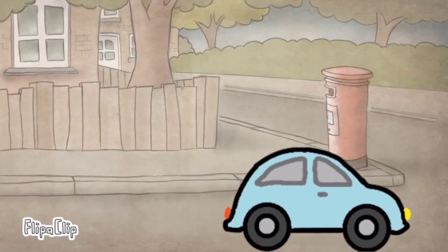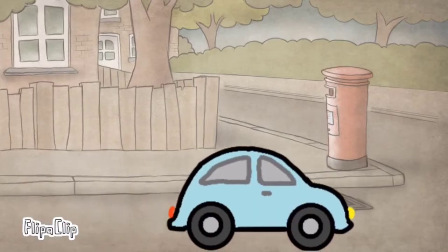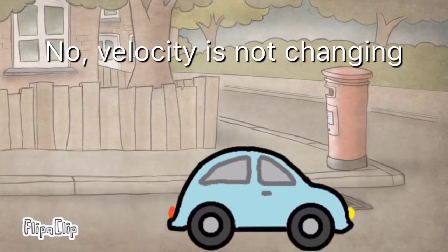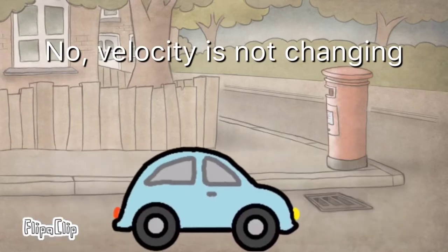Suppose a car is moving at a constant speed of 80 km per hour. Will there be acceleration? The answer is no, because in this case, the velocity is not changing at all.